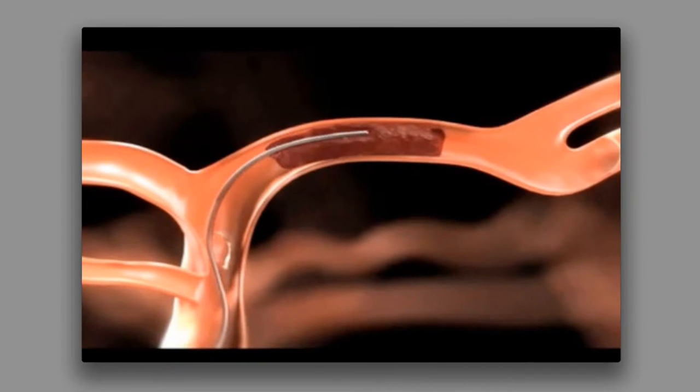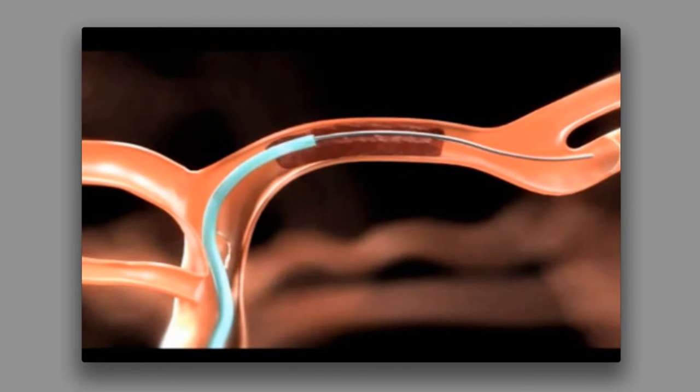In the first step of the procedure, a thin wire called a microwire is advanced up the arterial tree across the clot. This wire is used to advance a microcatheter, which is a long, thin plastic tube, also across the clot.